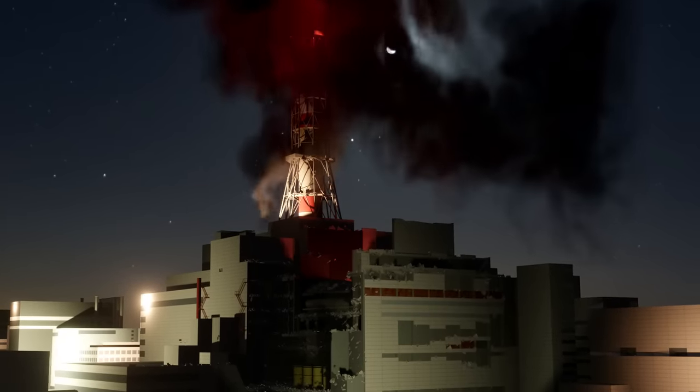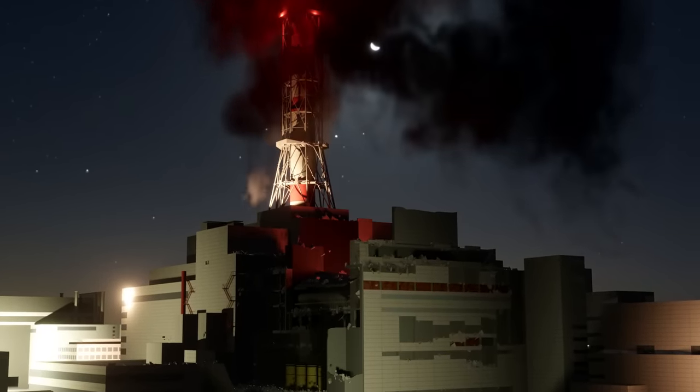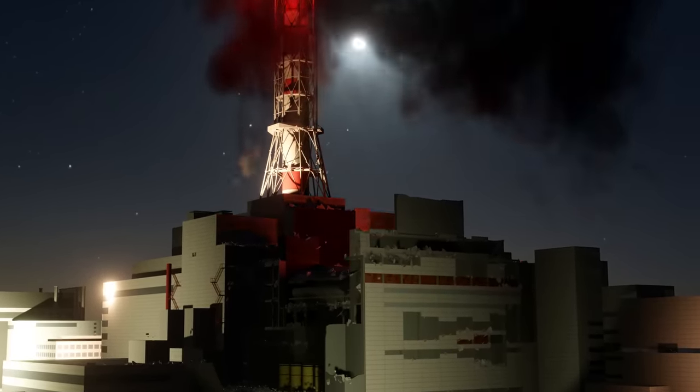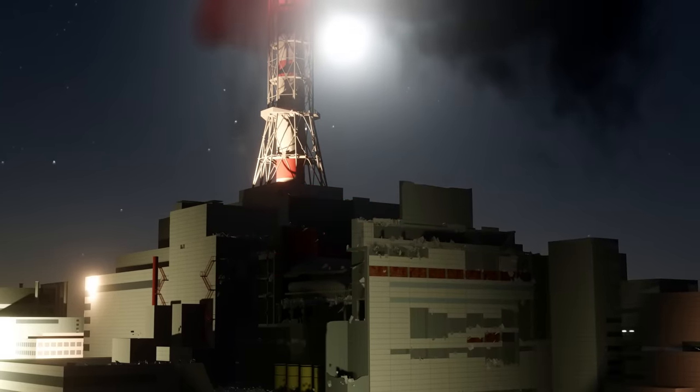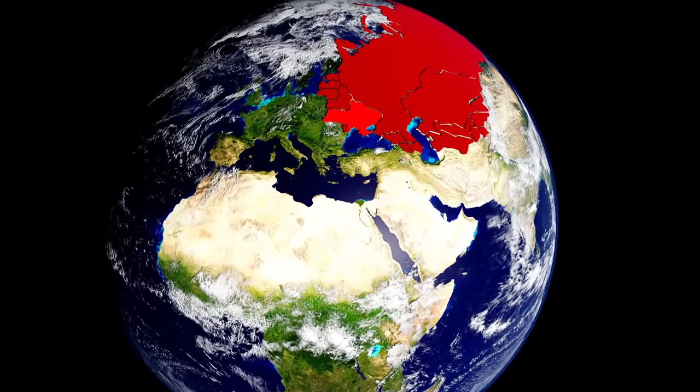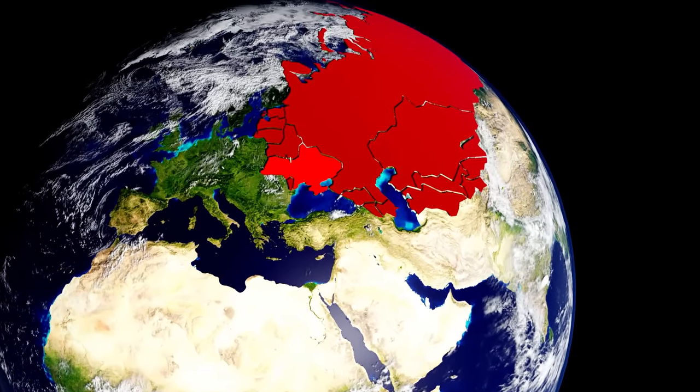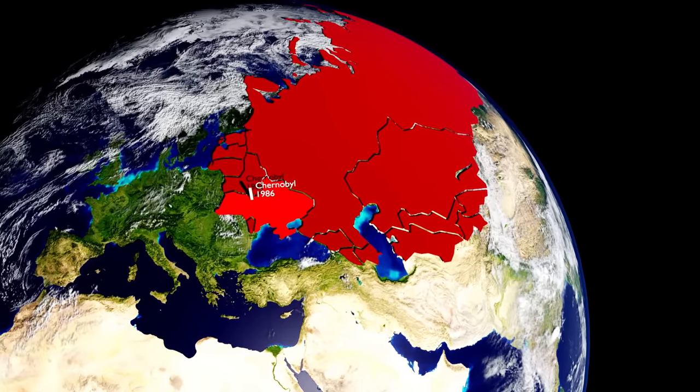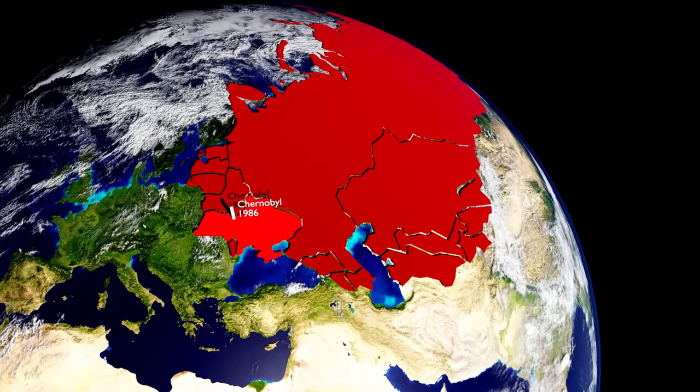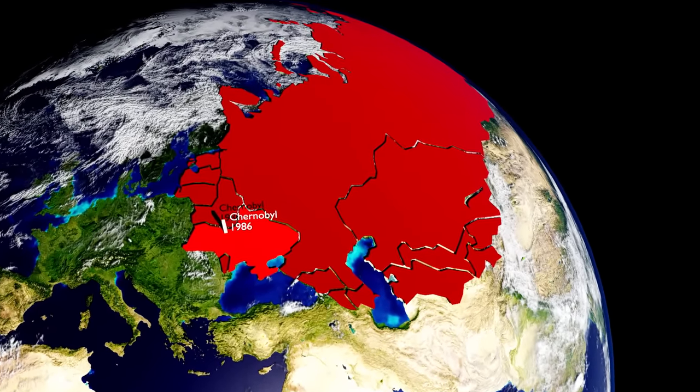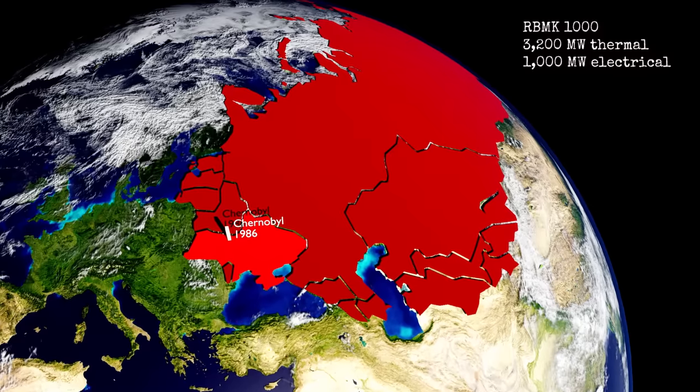Why did the emergency shutdown blow up the reactor? This is the central Chernobyl question. At the time of the disaster, Ukraine was one of the 15 Soviet republics. Chernobyl was in northern Ukraine near the Belarus border.